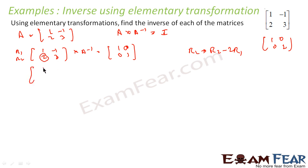So this becomes 0 and this becomes 3 minus 2 into minus 1. That is 3 plus 2 guys. So this becomes 5 into A inverse is equal to...